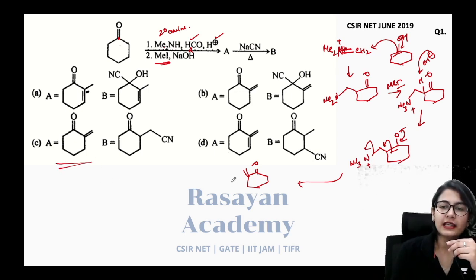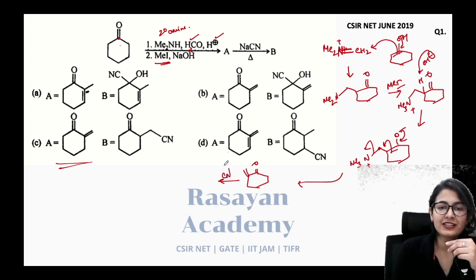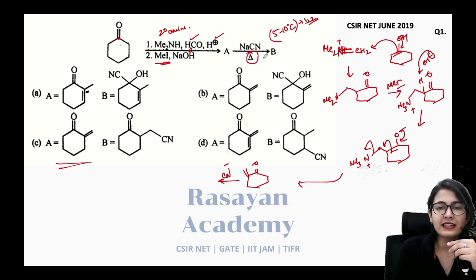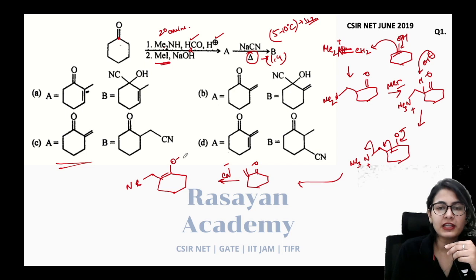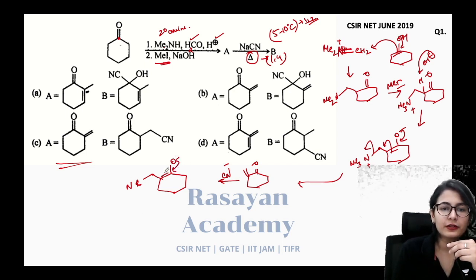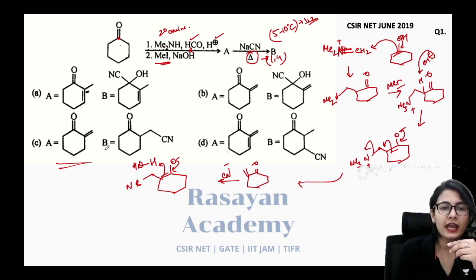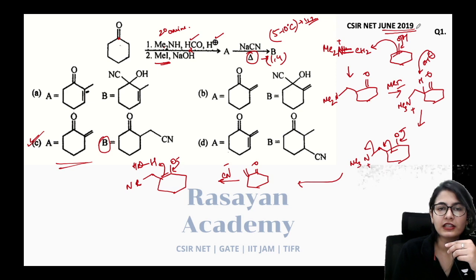This gives you an alpha-beta unsaturated carbonyl, and this is the Hofmann alkene because there is only one possibility for the leaving group. The last step is cyanide addition. At 5–10°C it is direct 1,2-addition; with heat it is 1,4-addition — thermodynamic conjugate addition of cyanide. CN⁻ attacks the fourth position, giving an enolate intermediate that tautomerizes after aqueous workup. The first correct answer is option C — Mannich reaction followed by 1,4 conjugate cyanide addition.